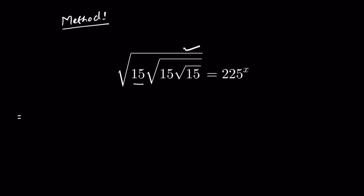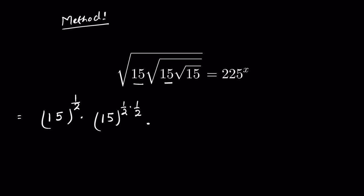So let's try Method 1. This 15 is under one square root, so we can write it as 15 to the power 1 upon 2. Then this 15 is under two square roots, so it is 15 raised to the power of 1 upon 2 times 1 upon 2. Then the third 15 is under three square roots, so it will be 15 raised to the power of 1 upon 2 times 1 upon 2 times 1 upon 2.